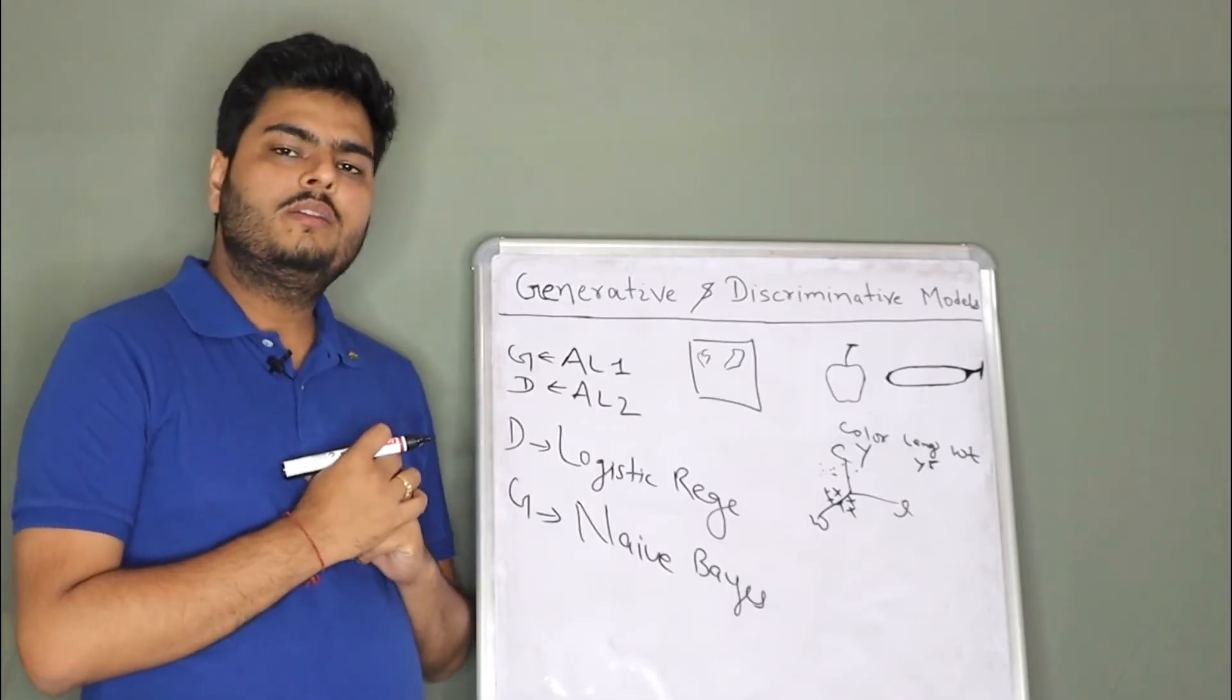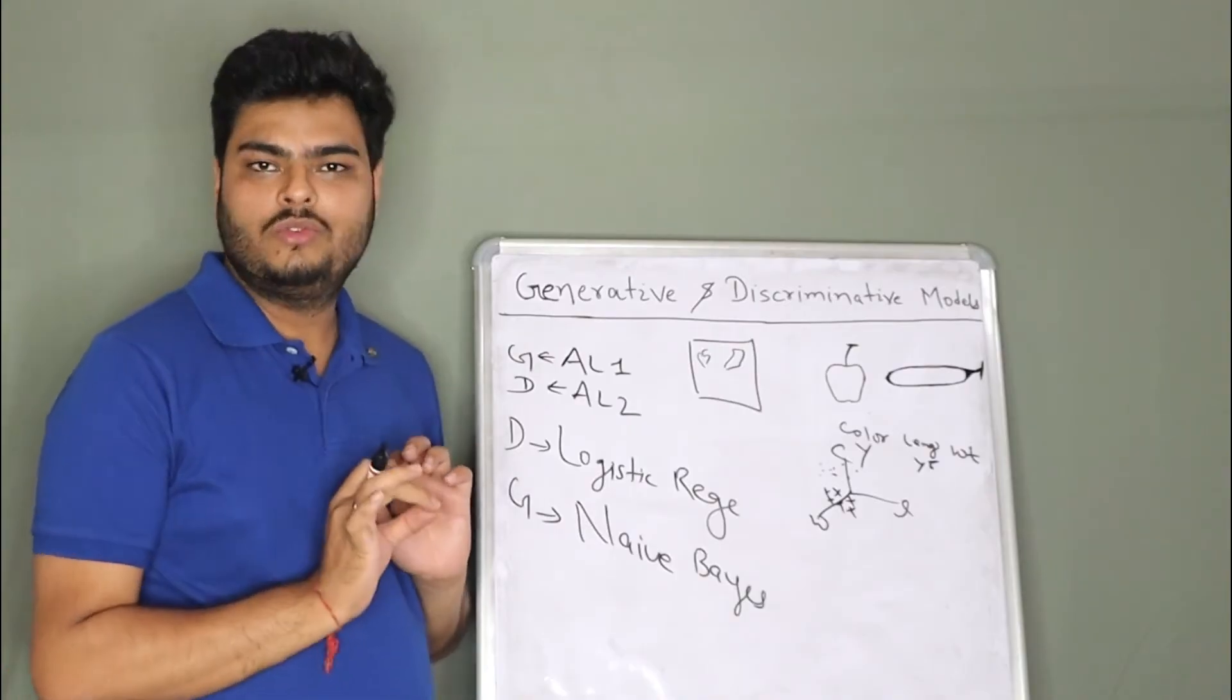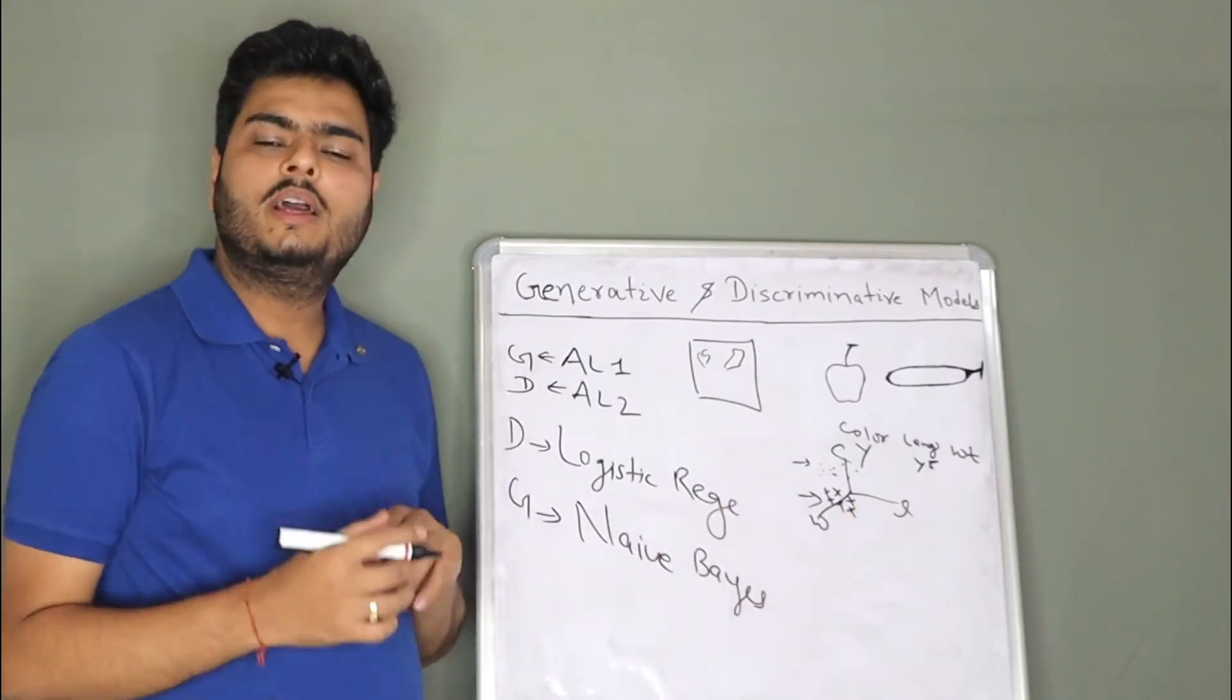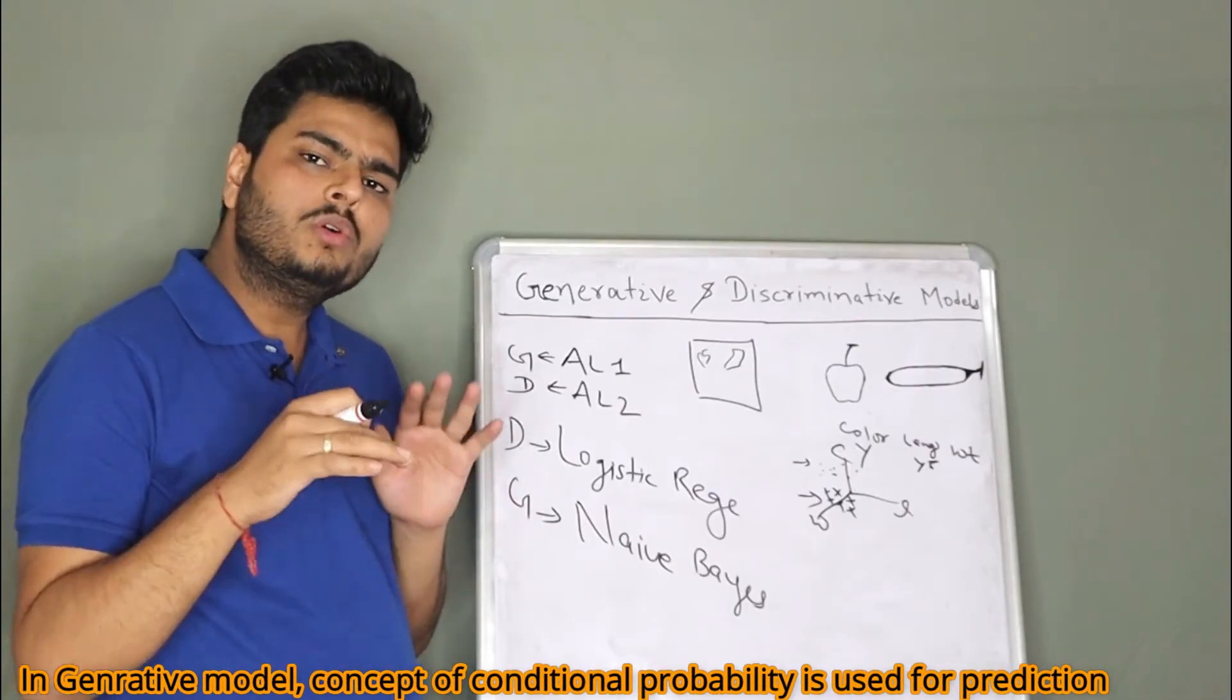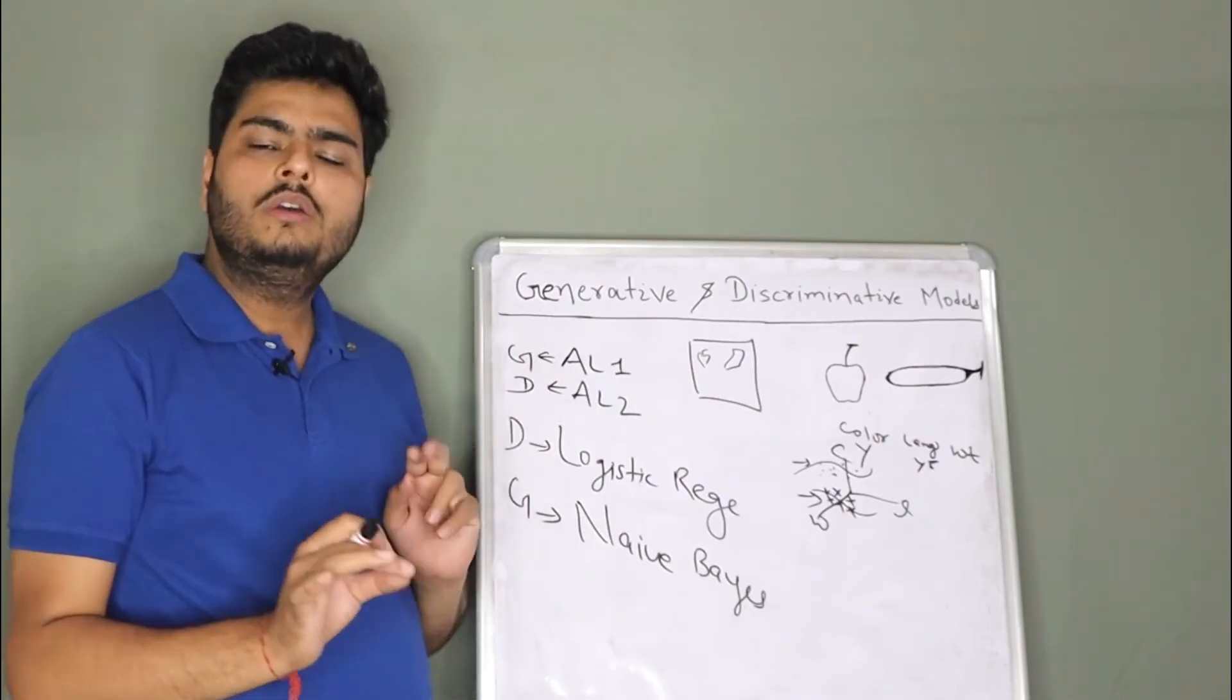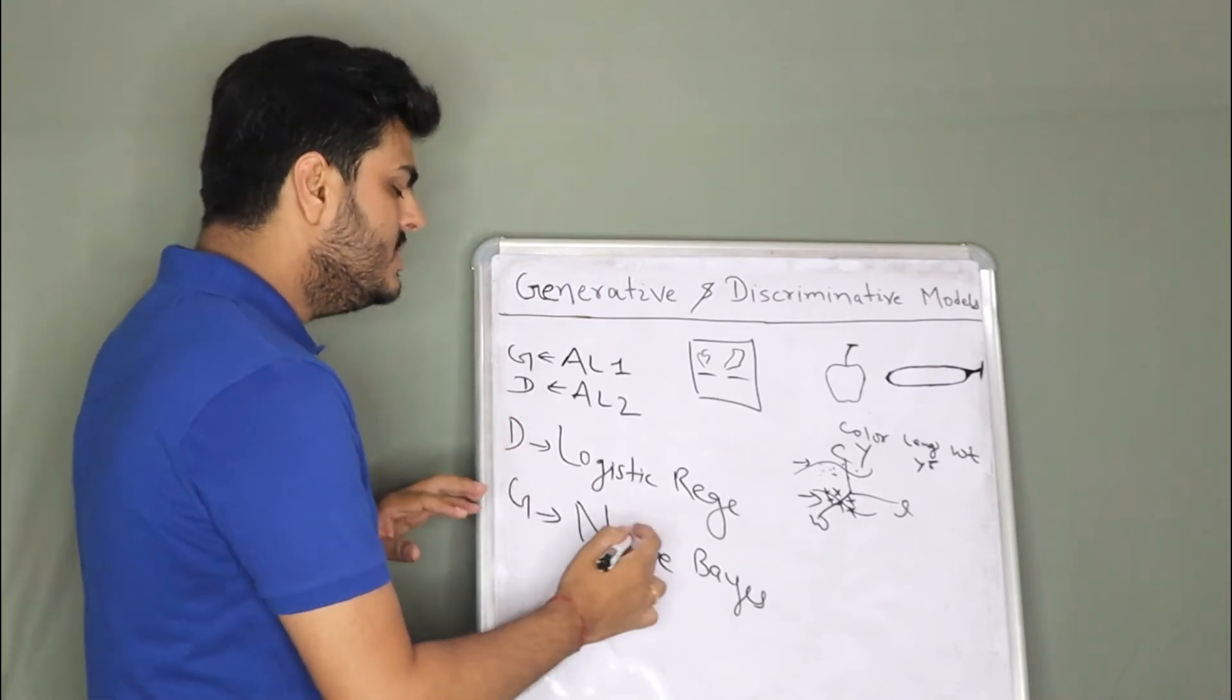Now, what is happening here is, if it is a generative classification, then it will try to model the individual classes. What is the meaning of modeling the individual classes? It will try to see how the probability curve of this is looking like around these parameters and how the probability of this is looking like around these parameters. Tomorrow a new example comes, it will check which distribution the new example is more closer to. And that is what alien one was doing when he was drawing apple image and banana image.